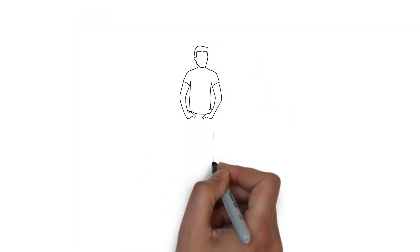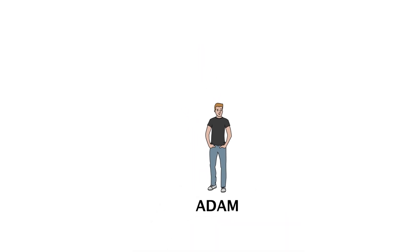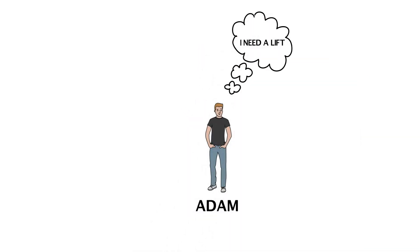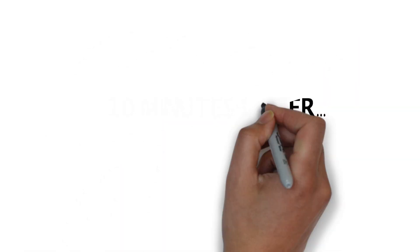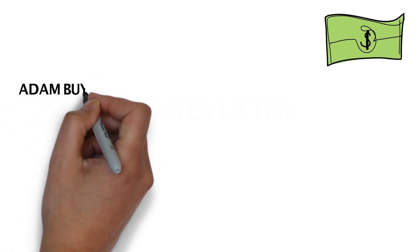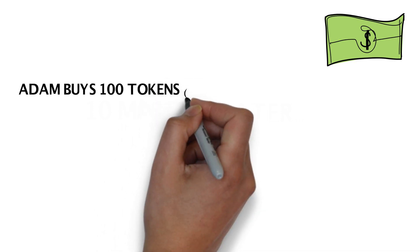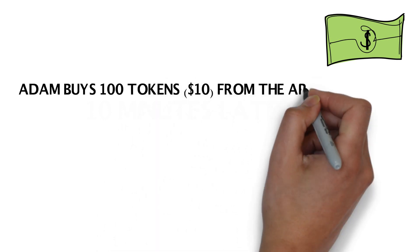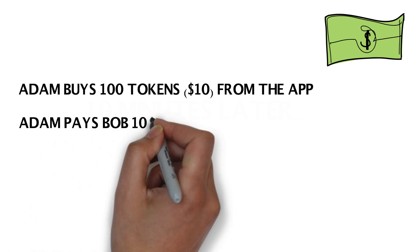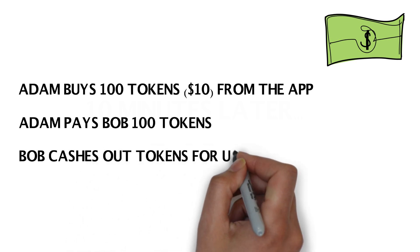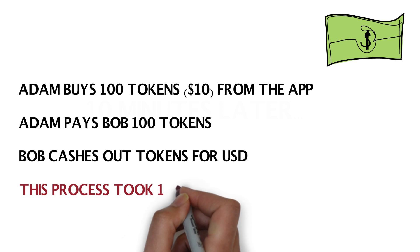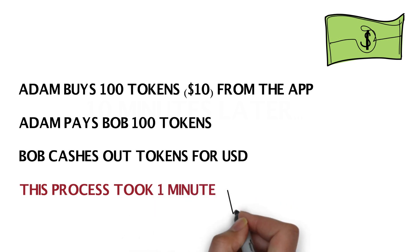Now let's introduce our first character, Adam. Adam needs a ride to his next destination, so he logs onto Carfair and books a car to pick him up. The ride takes 10 minutes and costs him $10. But remember, this is Carfair, so Adam must pay in fare tokens. As a result, the ride will cost Adam 100 tokens. These tokens are purchased by Adam on the application at the end of the journey. He transfers them to the driver, Bob, who immediately cashes them out via the app for US dollars. In total, it took just one minute between Adam buying tokens and Bob cashing them out.